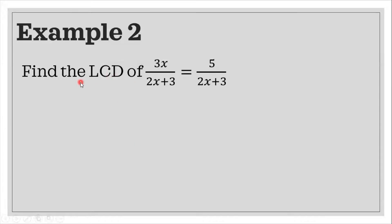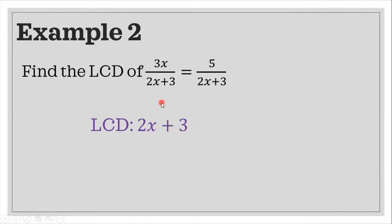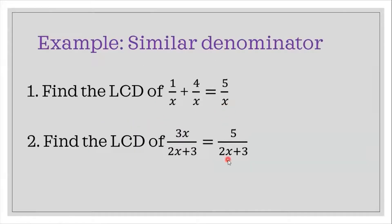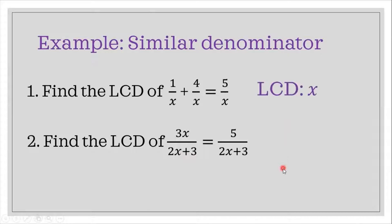Let's have the second example. Find the LCD of 3x over 2x plus 3 is equal to 5 over 2x plus 3. As observed, our denominator is the same. Thus, our LCD is just 2x plus 3. These first two examples illustrate that if the denominators are the same, you just have to simply copy the denominator — so LCD is x in example one, and 2x plus 3 in example two.